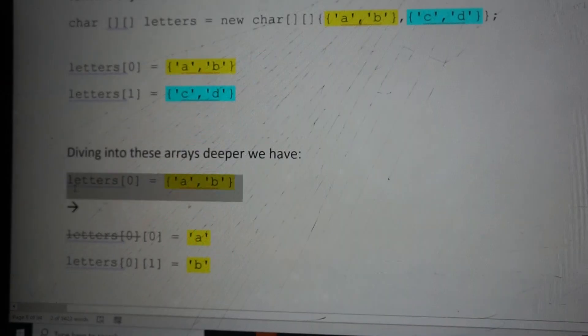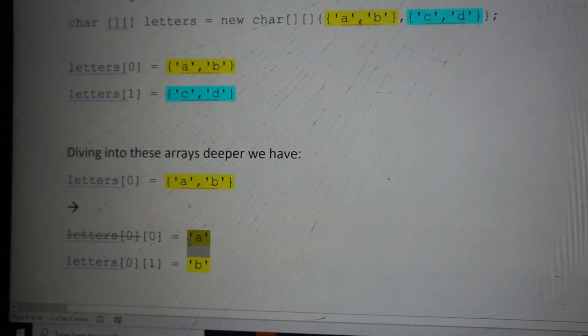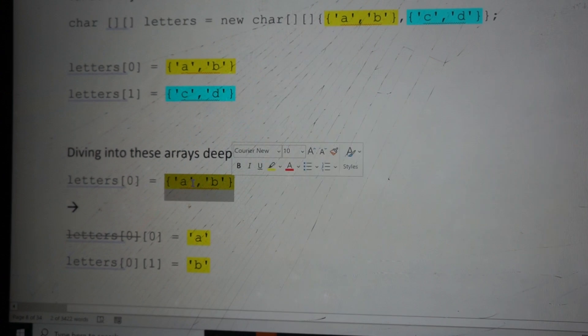The way to think about it is that letters[0] is essentially AB. If I want to access A, I can pretend that I have this array. How would we access this element inside this array?